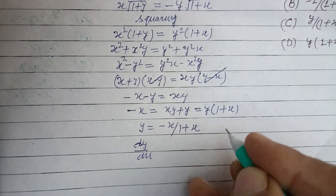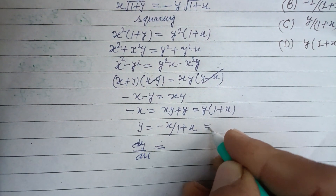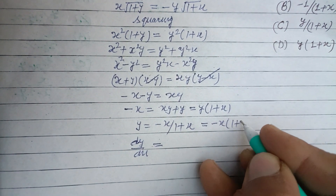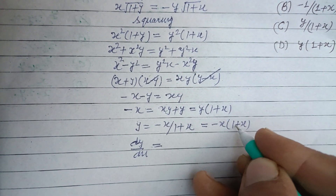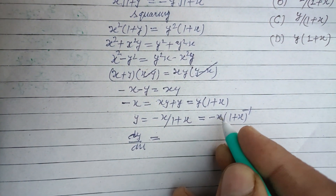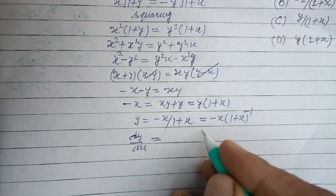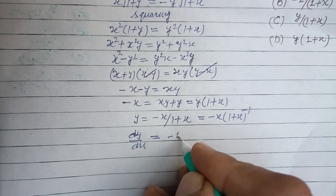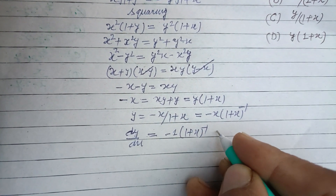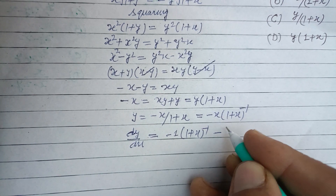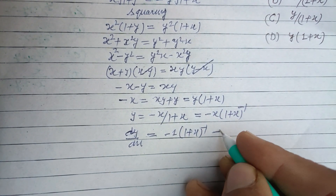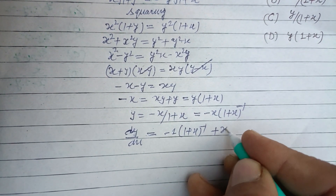dy/dx can also be written using the product rule. We write y = −x·(1+x)^(−1). Differentiating the first part: derivative of −x is −1, times (1+x)^(−1). Then minus x times the derivative of (1+x)^(−1), which gives minus x times −1·(1+x)^(−2).